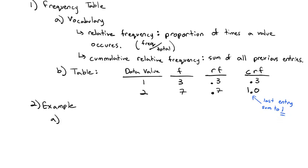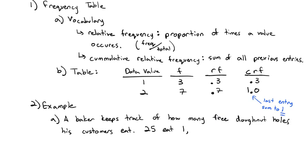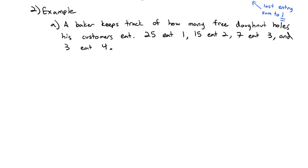Let's say a baker keeps track of how many free donut holes his customers eat. 25 eat one donut hole. 15 eat two donut holes. 7 eat three donut holes. And 3 eat four donut holes. Let's make a frequency table.